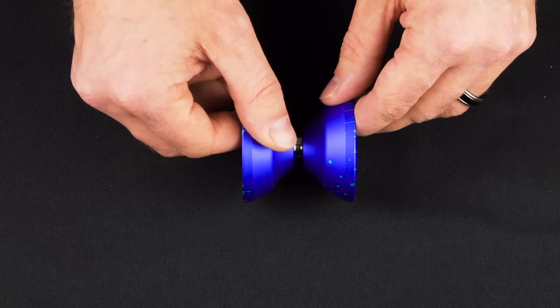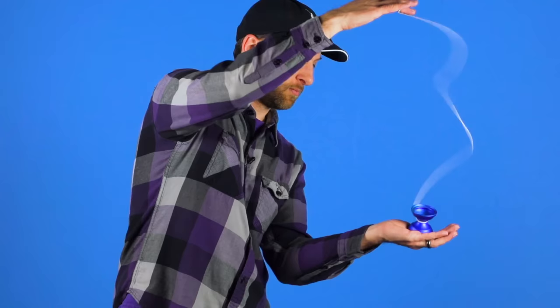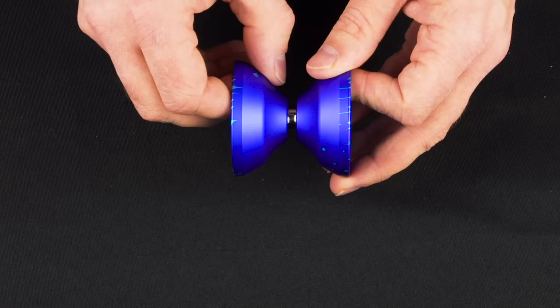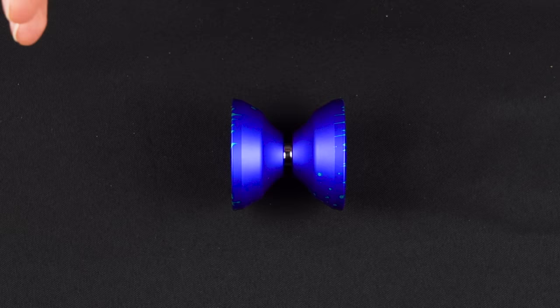Now the other thing is, is we changed the finish. Yo-yo Factory has started doing, they just call it a new matte, or a new blasted finish. It is a lot softer, it grinds super well, and it just feels really, really good. So they have been putting that on a lot of their premium yo-yos, and we were able to get them to put that on the Atlas as well. So we just feel like those two changes are just a wholesale improvement, and we are really happy that we were able to get those on the Atlas.